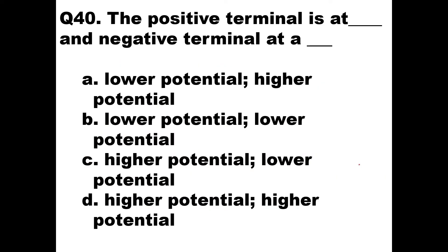Question number 40: the positive terminal is at dash and the negative terminal is at a dash. The current flows from positive terminal to negative terminal, where positive terminal is at higher potential and negative terminal is at lower potential. So option C is the right answer: positive terminal at higher potential, negative terminal at lower potential.